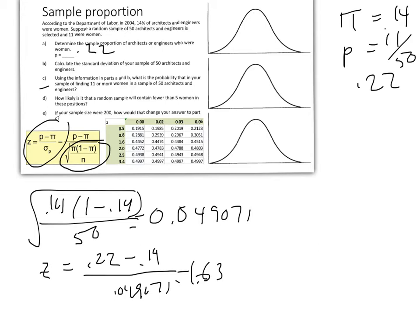We'll call this part C. In our table here, 1.63 on our modified standard normal is 0.4484. That's from 0 to 1.63. To get the probability of exceeding that, we say 0.5 minus 0.4484, and that is going to be 0.0516.